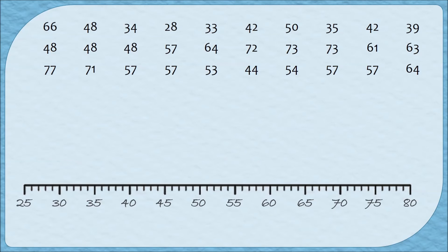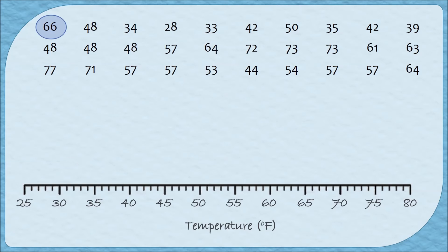So that I don't forget, I'm going to label my axis now. Each of these values represent temperatures measured in Fahrenheit, so I'm going to label my axis as temperature in degrees Fahrenheit. Then to make the dot plot I just go through my data and place a dot where each value is. For example, to graph 66 I go to where 66 is on the number line and place a dot there, hovering slightly above the line — I don't want to put the dot on the line since this is an axis, not a number line.